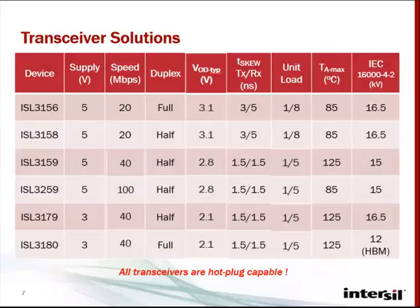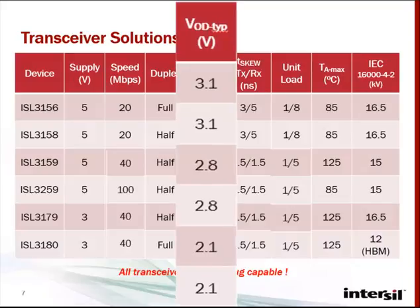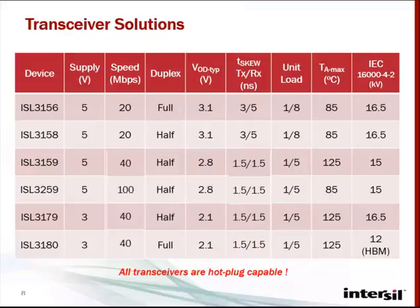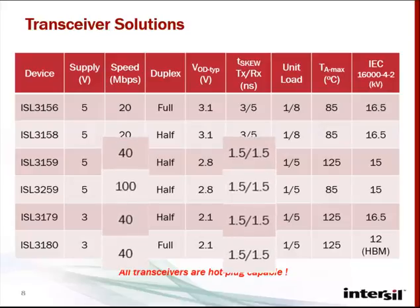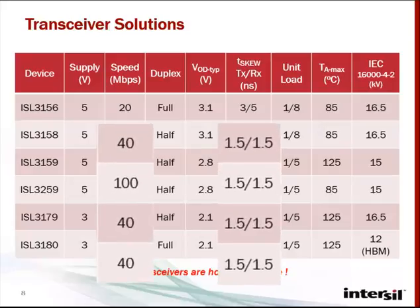Here's a list of Intersil's high-speed transceivers. All high-speed transceivers from Intersil provide differential output voltages far above the 1.5-volt minimum spec specified in the RS-485 standard. The ultra-high-speed devices with data rates from 40 megabits to 100 megabits have a maximum pulse skew of 1.5 nanoseconds. Except for the 3180,